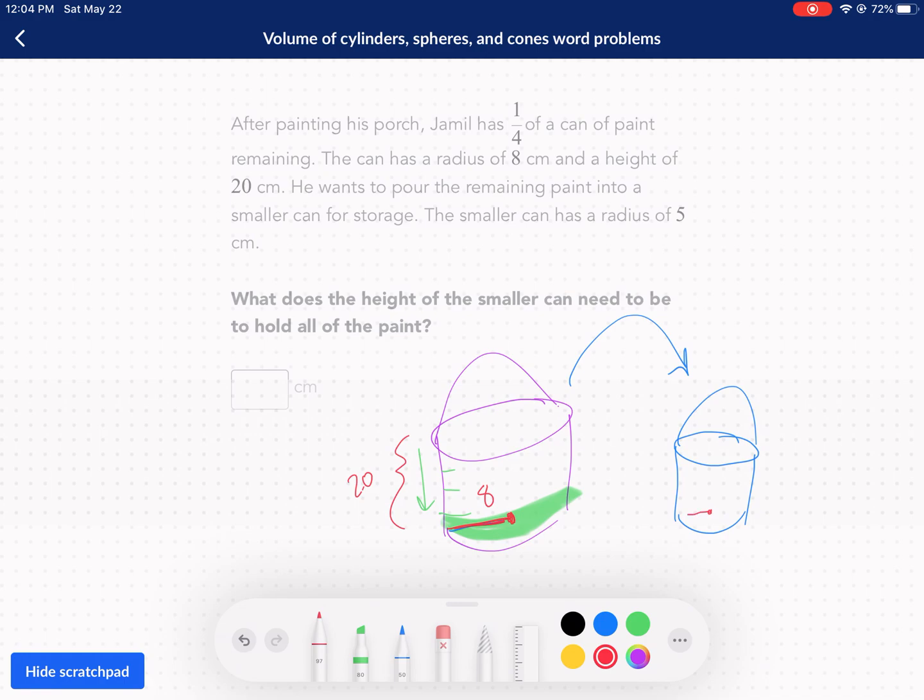A smaller can has a radius of five centimeters, but we can pick the height. So it's got a variable height for us. So we're going to start. We need to pick, first, find the volume of this purple can. So the volume is going to be equal to πr²h. π times the radius, 8², times h, which is 20. This is going to be a pretty big volume. We're going to have 64 times 20, so we have 1280π centimeters cubed for our volume of that big can.